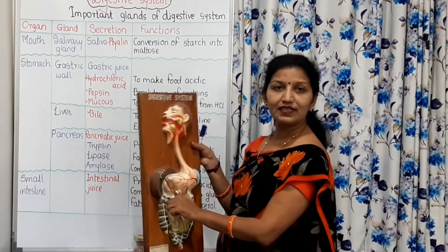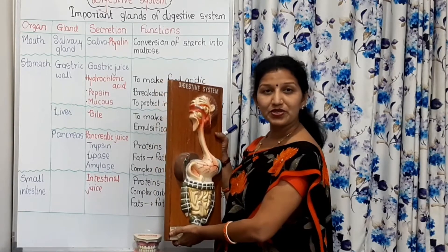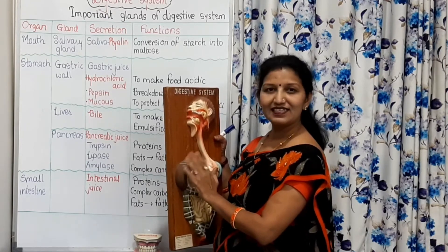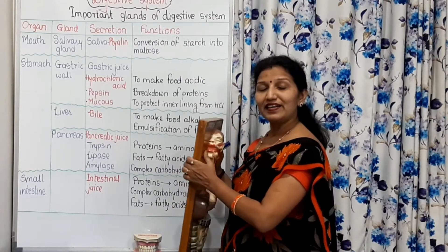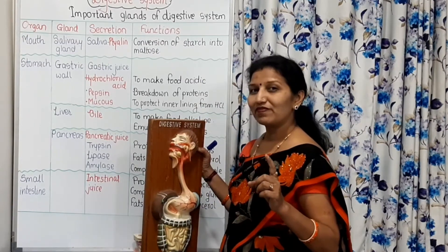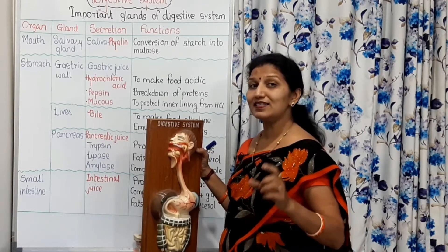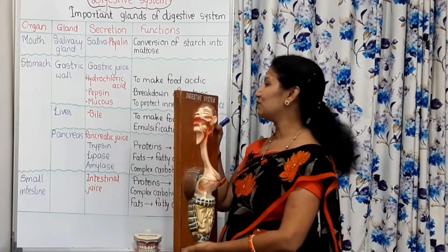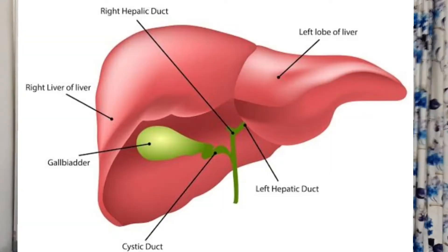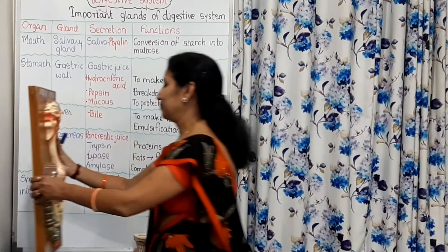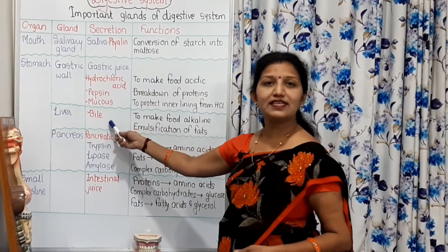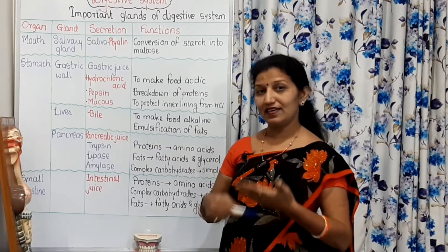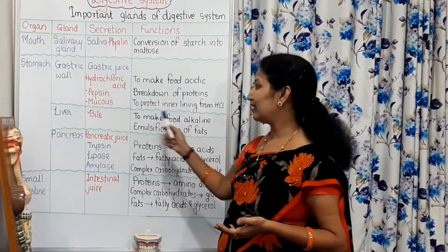The next one is the liver — the largest gland in our body. This was also a question on KBC, asked by Amitabh Bachchan: which is the largest gland in our body? It is the liver. Another KBC question: which is the hardest substance in our body? It is the enamel, tooth enamel. Now, the liver secretes bile juice. The function of bile juice is to make the food alkaline — this acidic food is made alkaline by the bile.